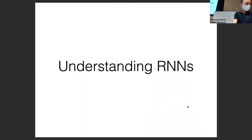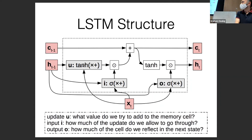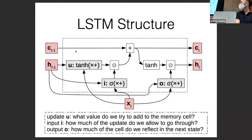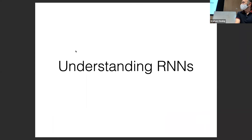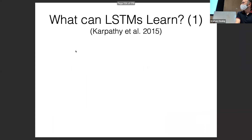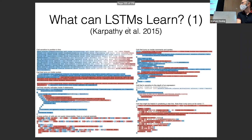The initial value of C can be set to zero or to a learnable parameter. A 2015 paper gave insight into what RNNs can learn by looking at every node in a learned LSTM and visualizing negative values in blue and positive in red. It performed character-level language modeling over natural language (English) or code (C/C++).